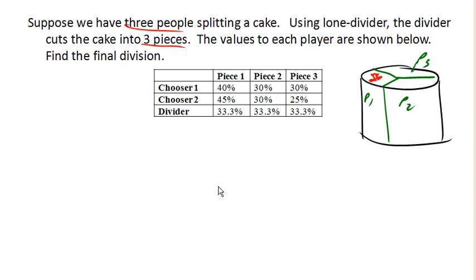Now, the divider, of course, values all the pieces equally because that's their job. They don't know which piece they're gonna be left with. And so, the lone divider method works like this. Each player is going to make a bid. So they're gonna list all the pieces that they value as a fair share. And so, chooser one is gonna say, I only value piece one as a fair share. Chooser two is gonna say, I only value piece one as a fair share.